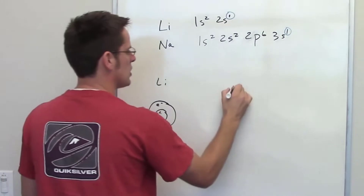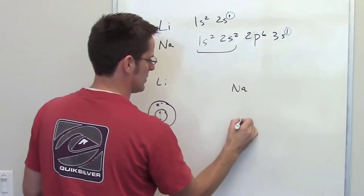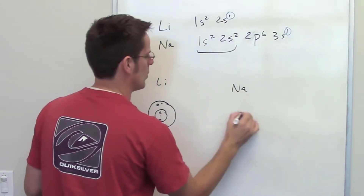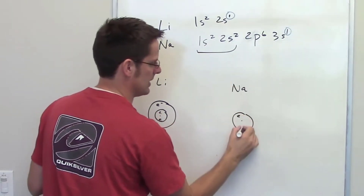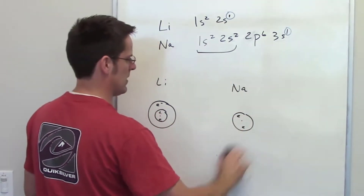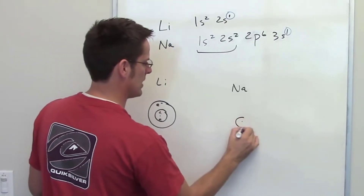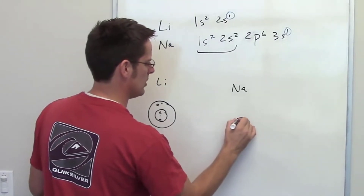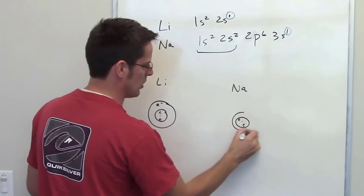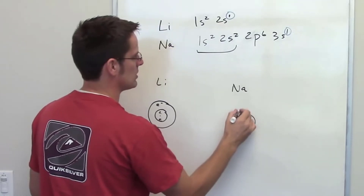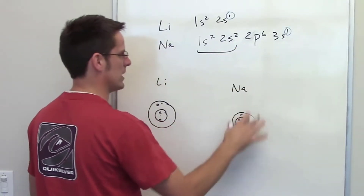In the case of sodium, we've got the same kind of thing. It has a nucleus, a 1s orbital that has two electrons in it, and nested within it is a 2s orbital, which also has two electrons in the case of sodium soaring around in there.